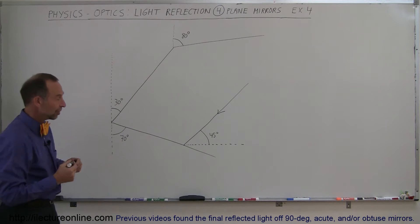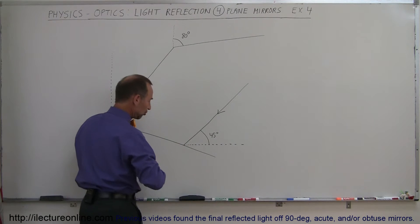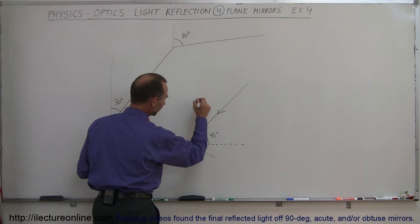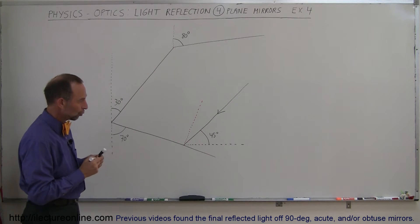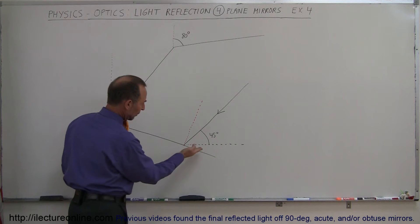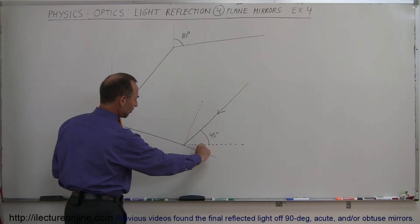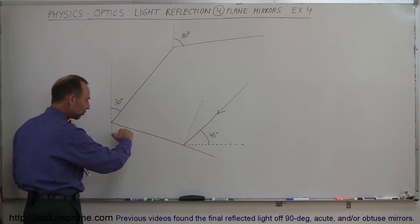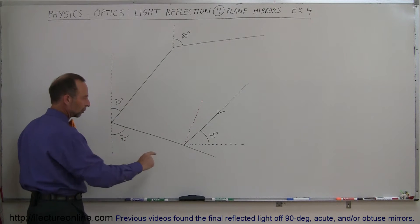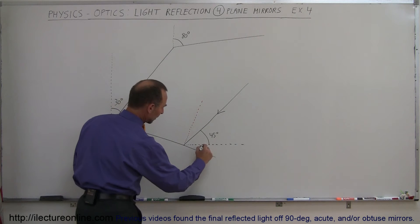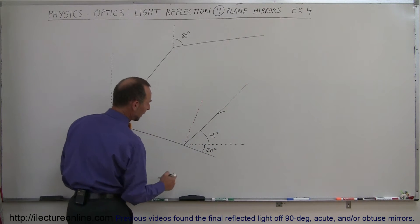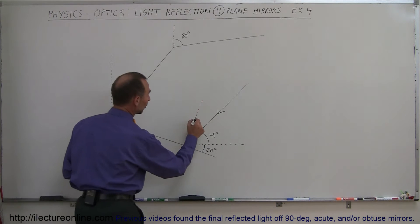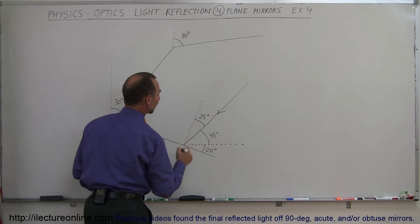The first thing I always do is draw the normal — let me draw that in a different color so it's a little easier to see. Here is the normal to the mirror, and we have to find the angle of incidence to the normal. We have a 45 degree angle here. The mirror is angled 20 degrees below the horizontal — if this is a 70 degree angle, then it's 20 degrees below horizontal, which means this must be a 20 degree angle. So 20 plus 45 is 65, and if you subtract 65 from 90, you're left with 25.